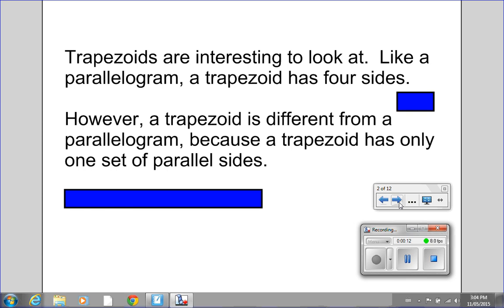Trapezoids are interesting to look at. Like a parallelogram, a trapezoid has four sides. However, a trapezoid is different from a parallelogram because a trapezoid has only one set of parallel sides, as we are going to see in the forthcoming slides.